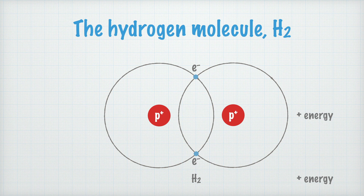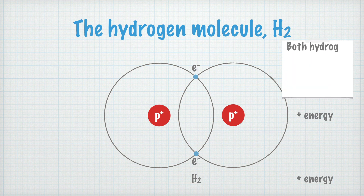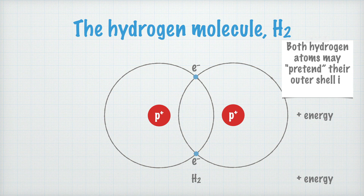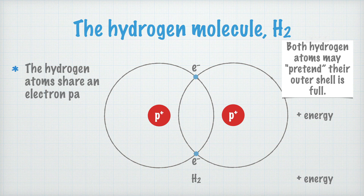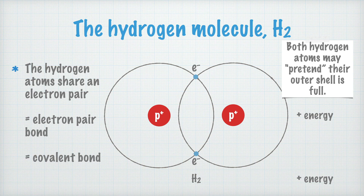Why does this bond form? Because the two atoms now share two electrons with one another, they may both pretend that their outer shell is full — that is, that they have noble gas structure. The hydrogen atoms share an electron pair, which is called an electron pair bond. It is also called a covalent bond, because they both share the electrons completely equally between themselves.